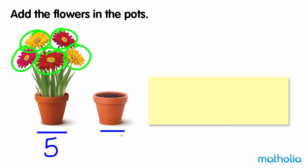In this pot, there are no flowers. There are zero flowers. There are five flowers altogether. So five plus zero equals five.